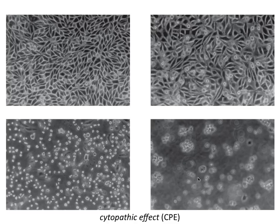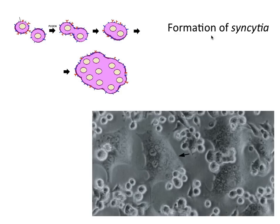So those are three different kinds of cytopathic effects: rounding up, detachment from the monolayer, and lysis. There are many other kinds that other viruses induce in cells. Another kind of cytopathic effect is the formation of syncytia. A syncytium is simply a giant cell with many nuclei that has arisen as a result of other cells fusing together. In many virus-infected cells, the infected cells display on their surfaces viral glycoproteins that have the ability to fuse membranes, forming syncytia with progressively more nuclei.